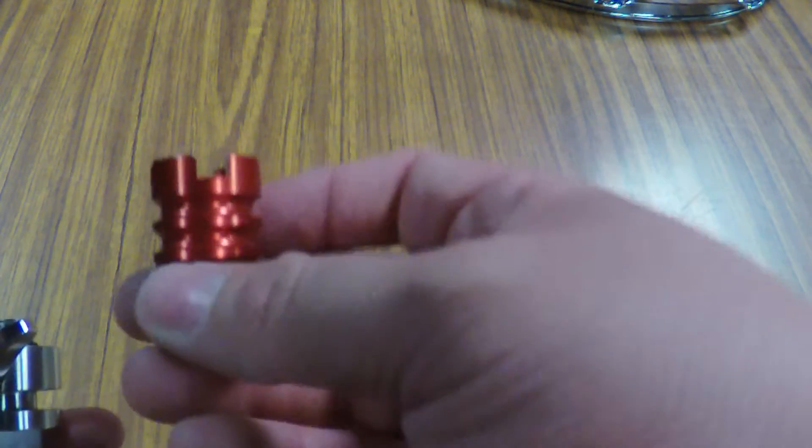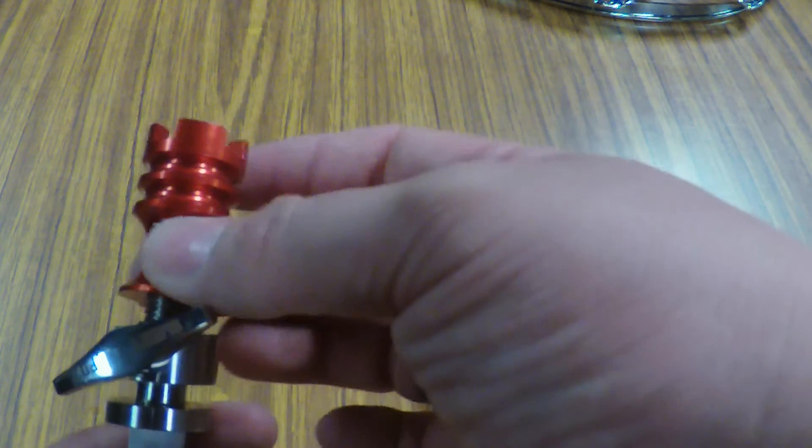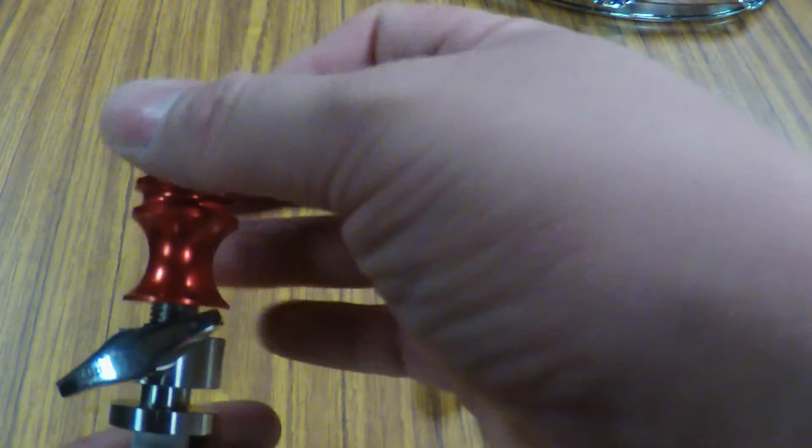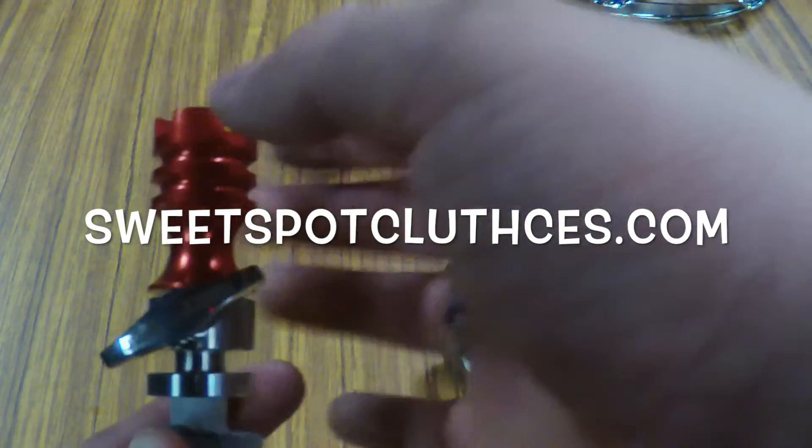The top pieces are machined aluminum so it's a little bit lighter than their standard clutch. It comes in an anodized finish. They have several colors you can get it in, a burned finish, brushed finish. They got a bunch of different options, so if you want to check them out go to sweetspotclutches.com for more info.